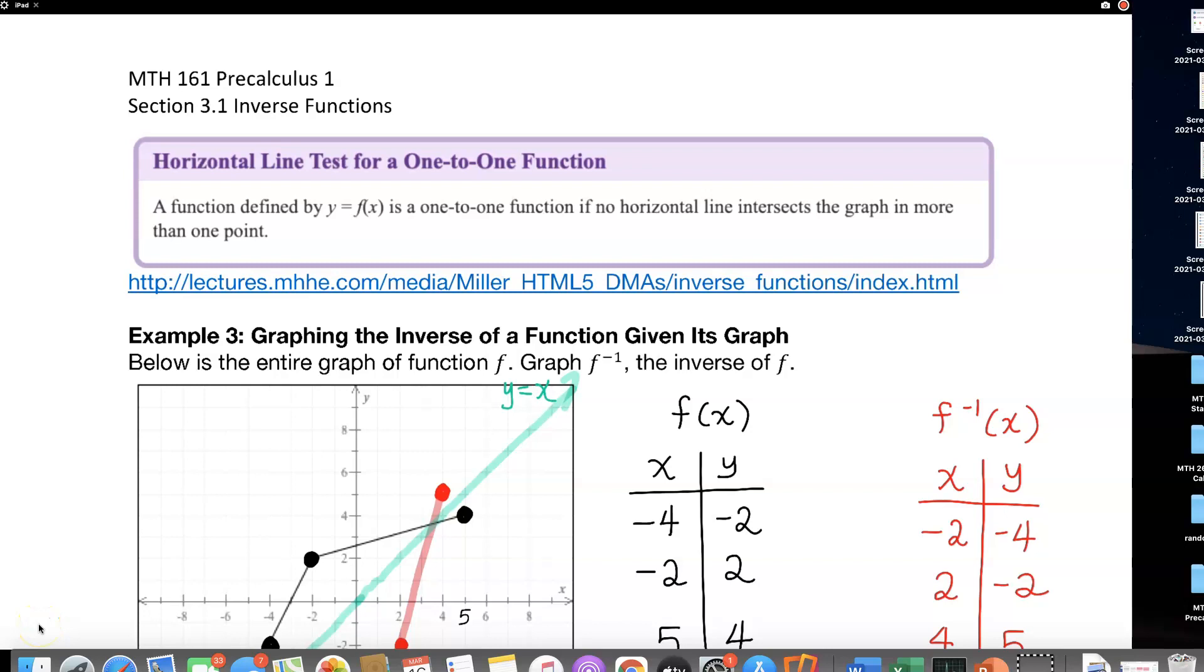Horizontal line test for a 1 to 1 function states that a function defined by y equals f of x is 1 to 1 if no horizontal line intersects the graph in more than one point. So guys, it's just like the vertical line test, but we're going to draw a horizontal line test. So if you draw a horizontal line and if it touches more than one point, then it is not a 1 to 1 function.